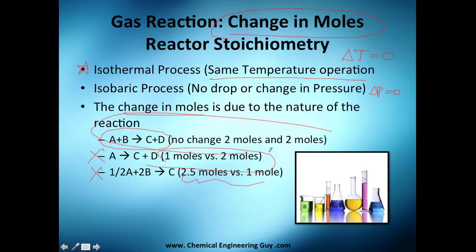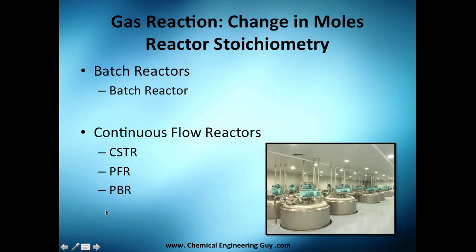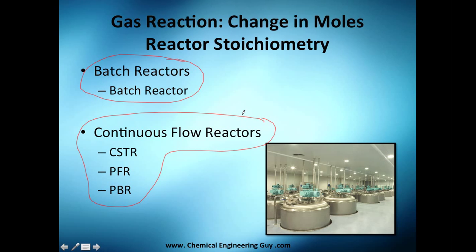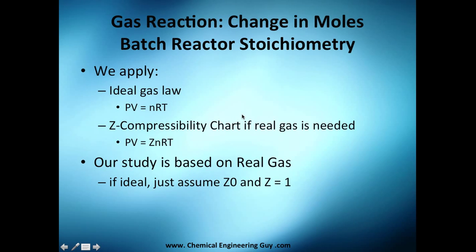The case with no change in moles can use the equations we already have. But the cases with a change in moles require new treatment. We're going to derive this for batch reactors and also for continuous flow reactors. See you in the next video to see how to build the stoichiometric table for a batch reactor.